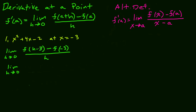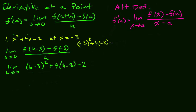We plug h minus 3 into the x values, giving us h minus 3 squared plus 4 times h minus 3 minus 2. Then we find f of negative 3: plugging in negative 3 gives negative 3 squared plus 4 times negative 3 minus 2, which is 9 minus 12 minus 2, equal to negative 5. So we subtract negative 5, which is the same as adding positive 5, and that's all over h.